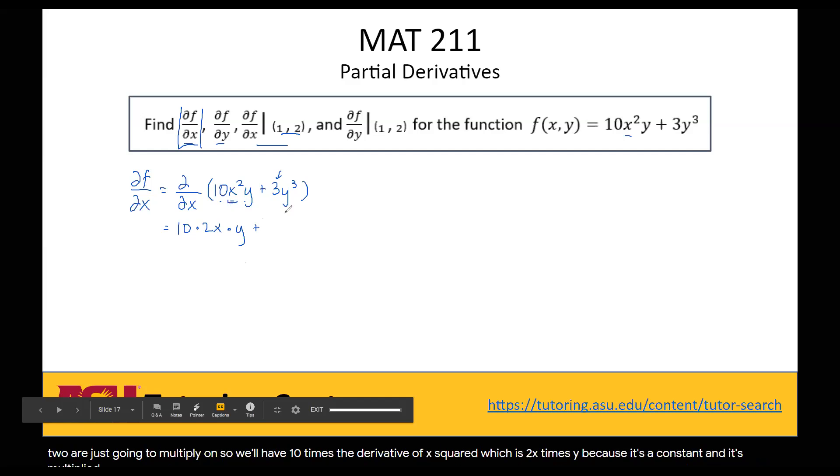And plus, when we look at our second term, our second term doesn't have any x's in it. So therefore, it is actually going to be treated as taking the derivative of a constant, which is 0. So if we clean this up a little bit, we have 20xy as our derivative with respect to x.